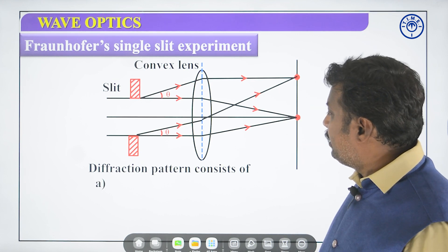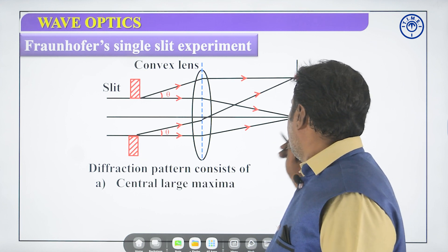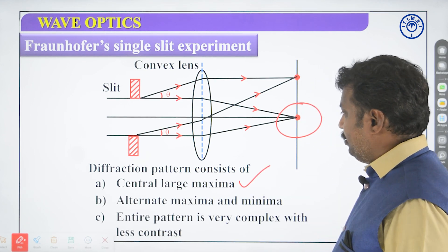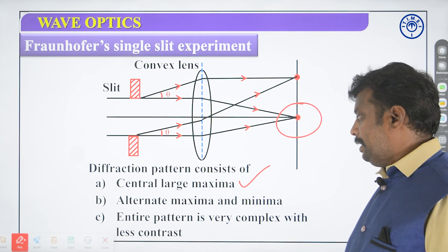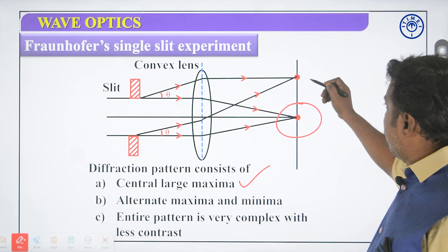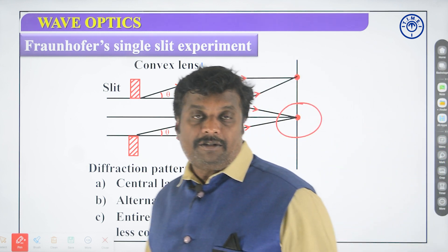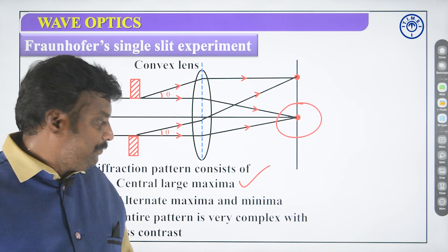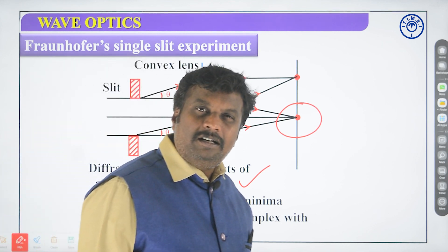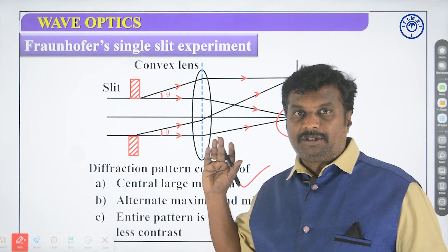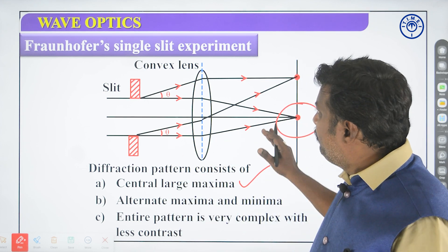So what happens, the diffraction pattern on this screen, what you observe here is called as diffraction pattern. First one is central maxima. This is your central maxima, okay. Central maxima that is very large. Then you get alternate maxima and minima. See, the one biggest drawback with your Fraunhofer lines is that it is very complex, it is totally complex, and the contrast, of course, contrast will be very very less in case of your Fraunhofer lines.